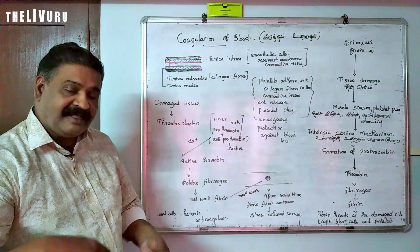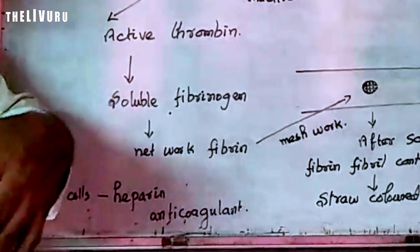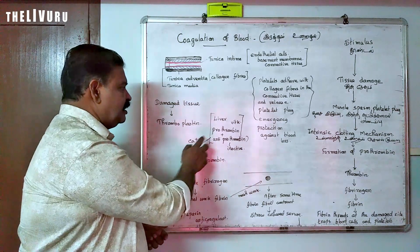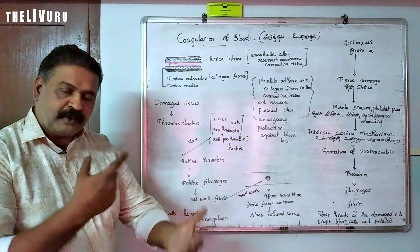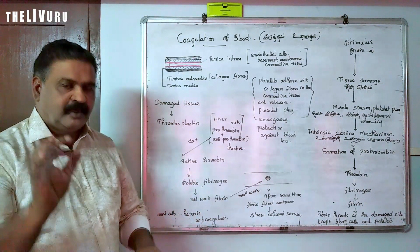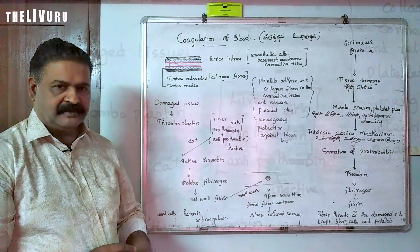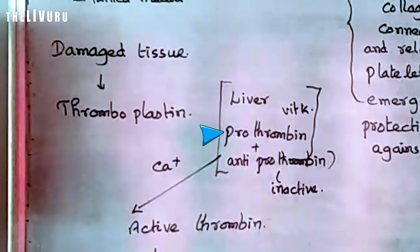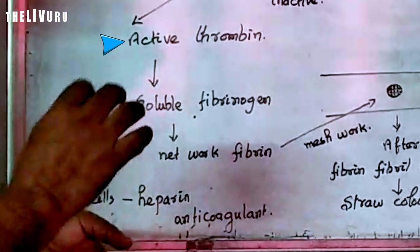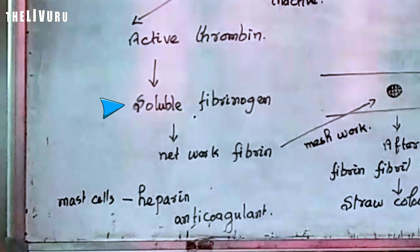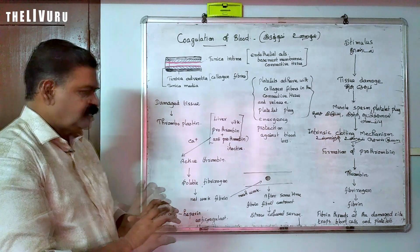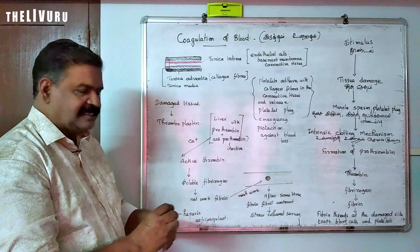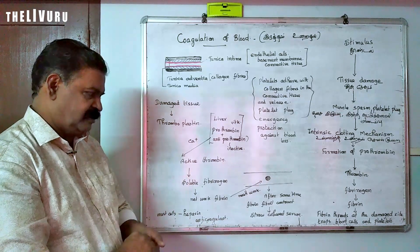So to summarize: when tissue damage occurs, thromboplastin is formed from the damaged tissue. In the presence of calcium and vitamin K, thromboplastin converts inactive prothrombin into active thrombin. Thrombin then converts soluble fibrinogen into a network-like fibrin. The net attaches to the wound site, and platelets and other substances become entangled in the meshes — thus the blood gets coagulated.